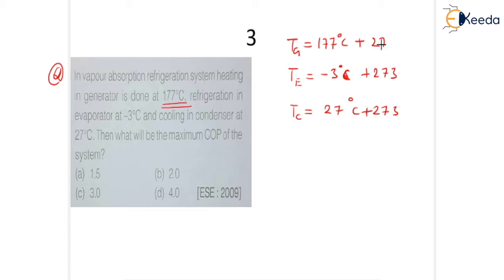After that we have to apply our COP formula and calculate our exact data. So my dear friends, what is the value? 273 plus 177 is nothing but 450 Kelvin, and here 270 Kelvin, and here 300 Kelvin.